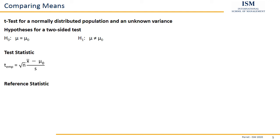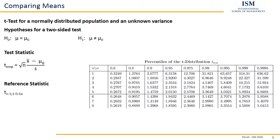The corresponding reference statistic must be looked up in the t-distribution table, because here we have t_(n−1, 1 − ½α) — where n−1 is the degrees of freedom. We have degrees of freedom in rows and 1−α values in columns. For example, with 6 observations we have 5 degrees of freedom, and with alpha of 5% we look up 0.975, giving a reference statistic of 2.5706.